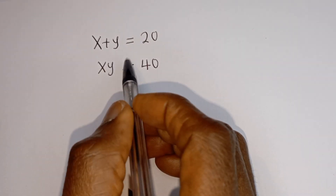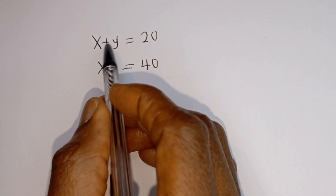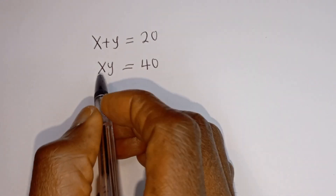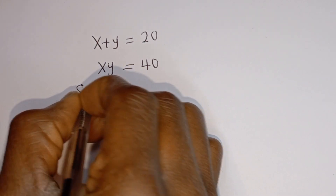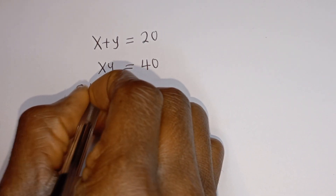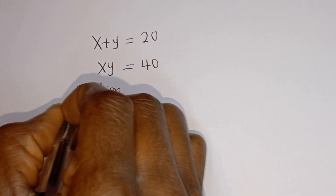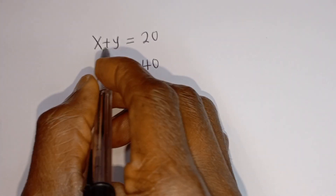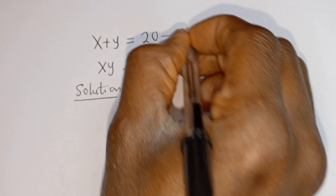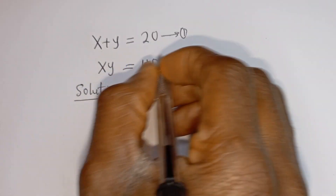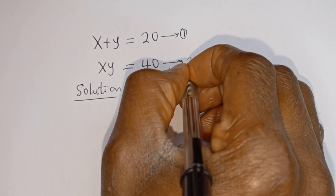Hello, how to solve for x and y in this equation. x plus y is equal to 20 — let's call this equation 1. xy is equal to 40 — let's call this equation 2.